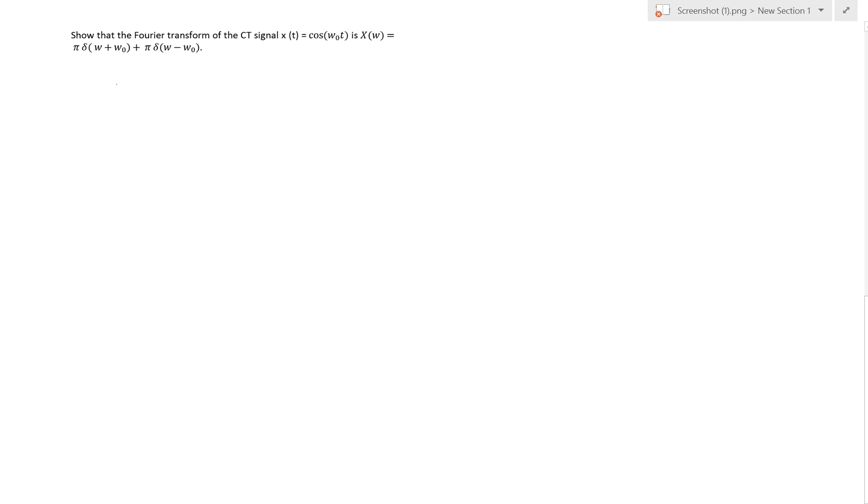Hello everyone, we have this problem here which says show the Fourier transform of the continuous signal x(t) = cos(ω₀t), and this is the Fourier transform of cos(ω₀t).